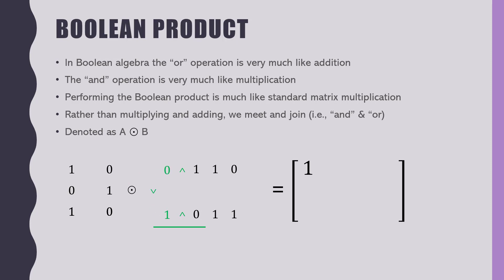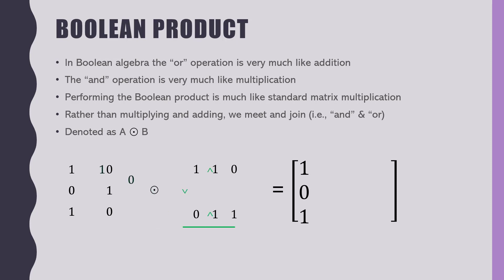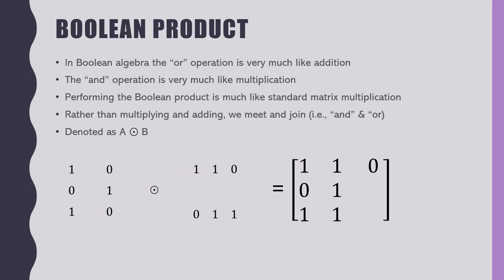Next, we take the second row, first column, do the AND and OR operation — the answer is 0. Next one is 1. Now the next one is the first row with the second column — the answer is 1. Continuing through the remaining entries: 1, 1, and 0. If this is a little unclear, you can rewind and rewatch to make sure you understand it.